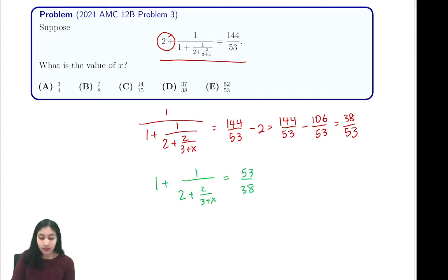Now we're just going to repeat the process. We want to get rid of this 1, so we subtract 1 from both sides. We'll see that 1 over 2 plus 2 over 3 plus x equals 53 over 38 minus 1, which can also be written as 38 over 38, and that gives us 15 over 38.